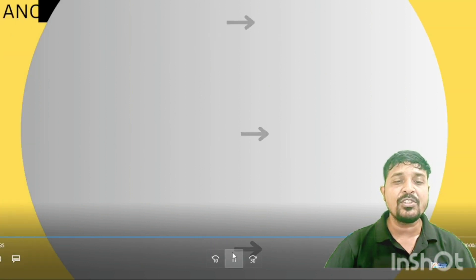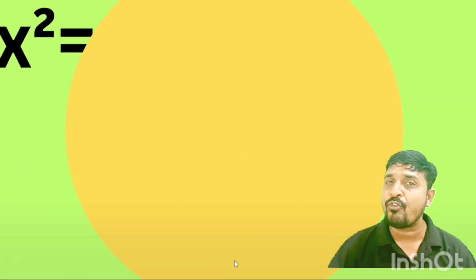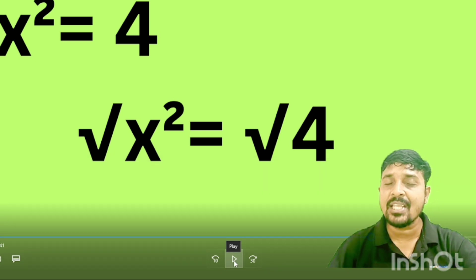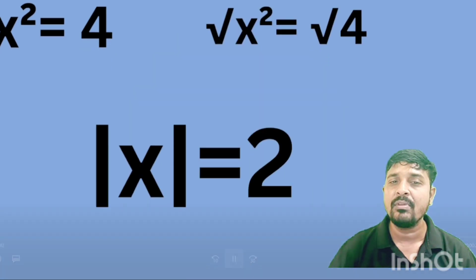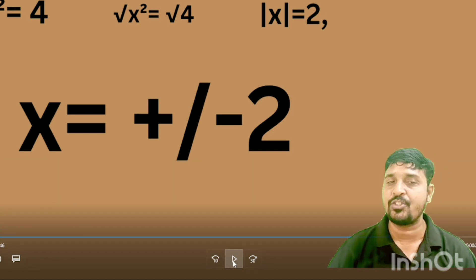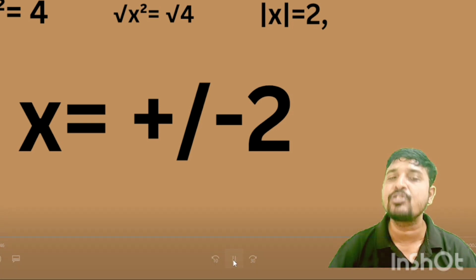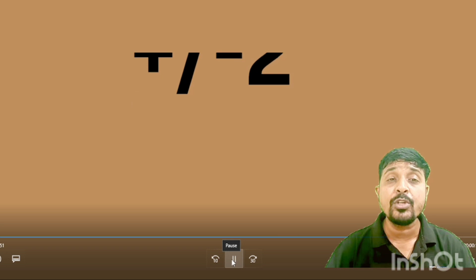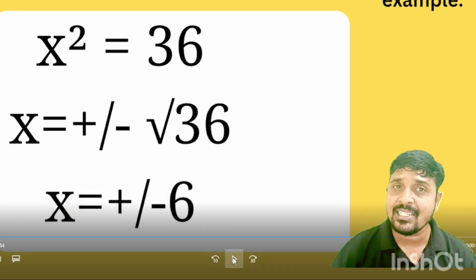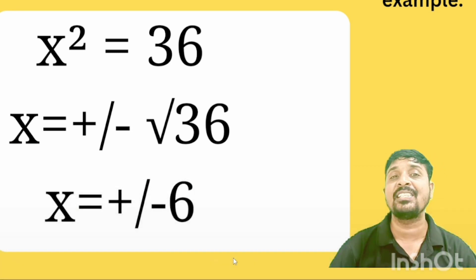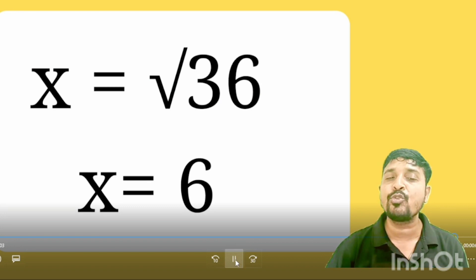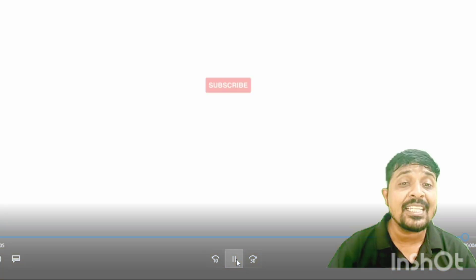Now let's jump into another example. If x squared equals 4, we take the square root on both sides: root over x squared equals root over 4, which gives modulus of x equals 2. That means x equals either plus 2 or minus 2, because of the modulus. Similarly, if x squared equals 36, then x equals plus or minus root over 36, and root over 36 equals positive 6. So x equals plus or minus 6, but root over 36 itself equals only positive 6.